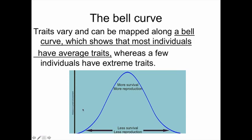Over here on the y-axis, we have the number of individuals, and on the x-axis, we have the variation of a trait. The range, the differences within a certain type of trait.